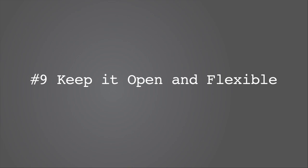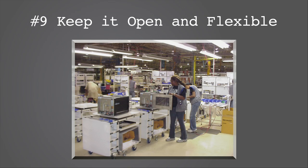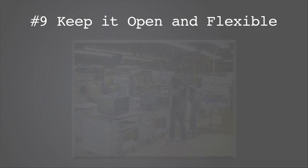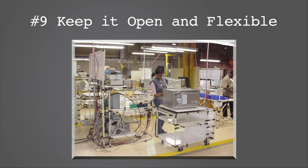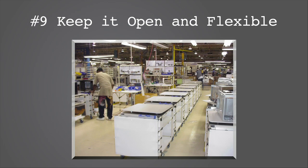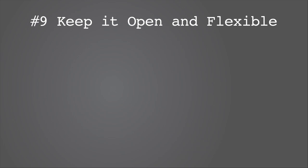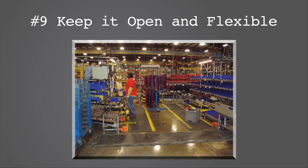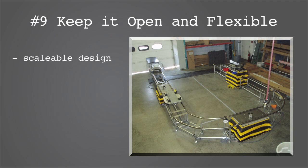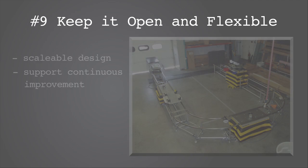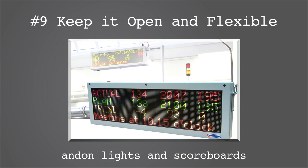Keep it open and flexible. Keep sight lines across the cell open to improve communication between the team and also for fast, real-time visual management on the floor. Flexible cell design should be scalable and encourage change and continuous improvement. Use andon lights and scoreboards for up-to-the-minute visual line status.